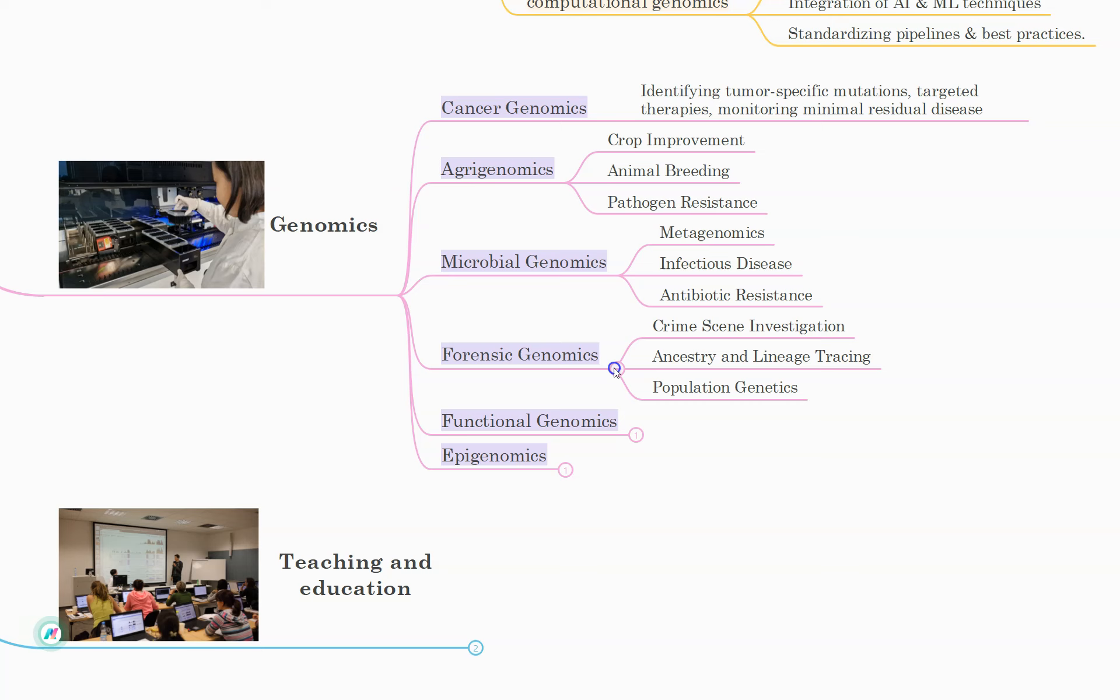From forensic genomics, crime investigation, where high resolution analysis of forensic samples, degraded or mixed DNA samples can be conducted. Ancestry and lineage tracing, tracing genetic ancestry, establishing familial relationships. And population genetics, where genetic variation within and between populations for forensic investigations can be studied.